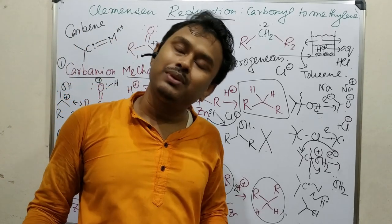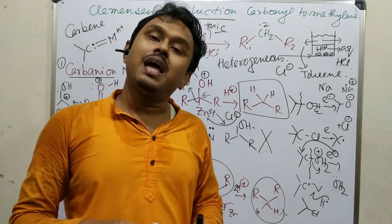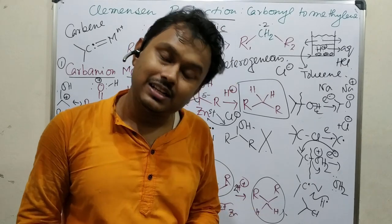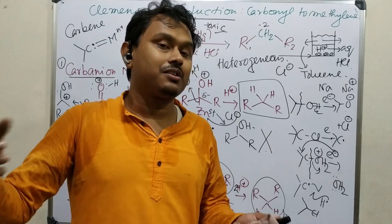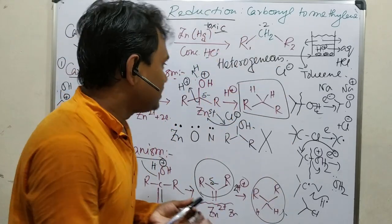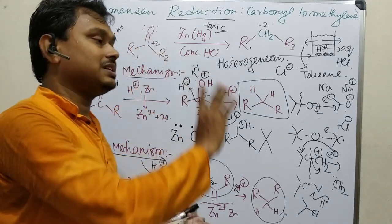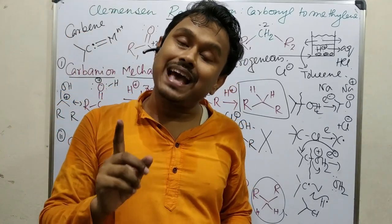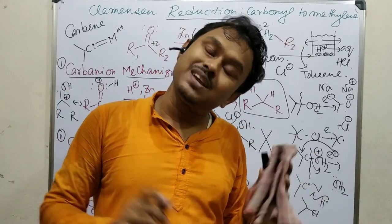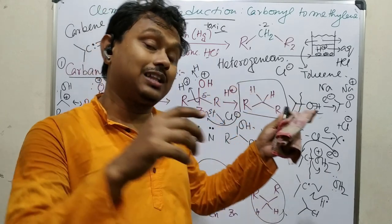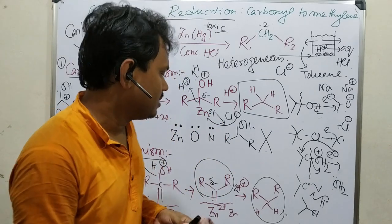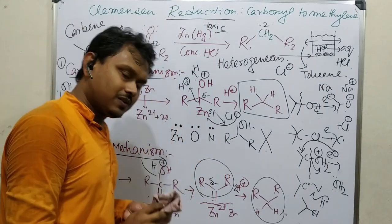The main practical application of Clemmensen reduction is in Friedel-Crafts alkylation. Direct Friedel-Crafts alkylation results in polyalkylation. If you want selective alkylation, first do the acylation, then reduce using Clemmensen reduction. Keep in mind that this process is useful only when the molecule has no acid-sensitive moiety — all functional groups must be stable in acid. If the molecule is alkali-stable instead, you should use Wolff-Kishner reduction.